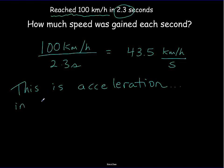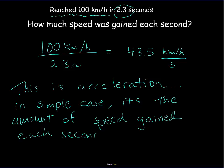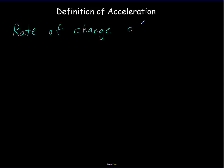At least in simple cases — and we'll talk more about what makes a simple case later — acceleration is the amount of speed gained each second, or each unit of time. More generally, beyond the simplest case, the definition of acceleration is the rate of change of velocity. Since velocity is a vector, acceleration likewise is going to be a vector.